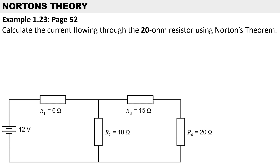Let me show you the steps we'll be following. First of all, we have an electric circuit with four resistors. The fourth resistor is our load resistor of 20 ohms, and we have a voltage source of 12 volts.